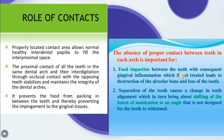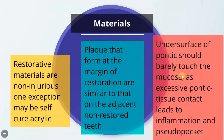Another iatrogenic factor involves materials. Restorative materials are usually non-injurious, with one exception: self-cure acrylic, which may cause injury to the gingiva. Plaque that forms at the margin of a restoration is similar to that on non-restored teeth, so there is no ecological difference. However, the undersurface of a pontic should barely touch the mucosa, as excessive pontic tissue contact or over-contoured pontics lead to inflammation and pseudopockets.